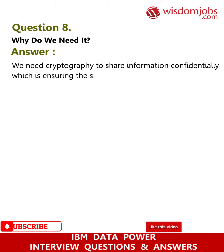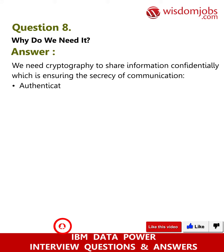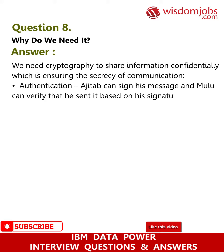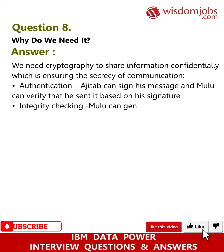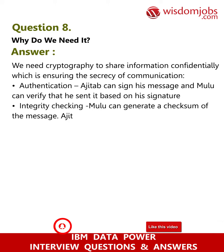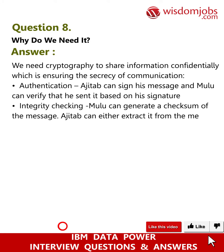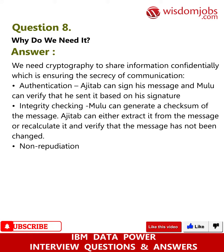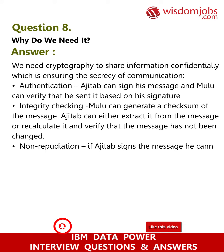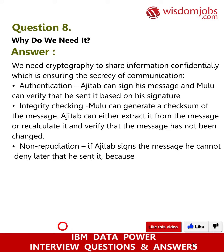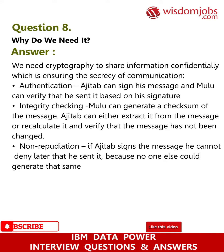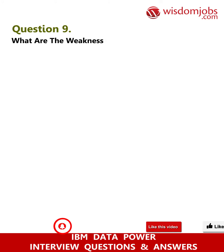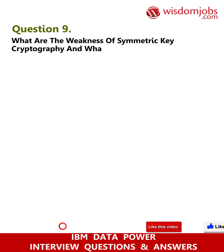Question 8: Why do we need cryptography? Answer: We need cryptography to share information confidentially — ensuring the secrecy of communication. Authentication: Ajtub can sign his message and Mulu can verify that he sent it based on his signature. Integrity checking: Mulu can generate a checksum of the message; Ajtub can either extract it from the message or recalculate it and verify that the message has not been changed. Non-repudiation: if Ajtub signs the message, he cannot deny later that he sent it because no one else could generate that same signature or private key.